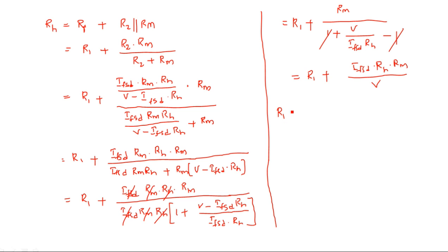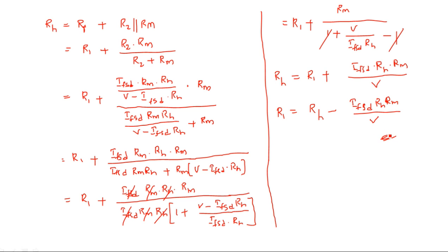But what we need? We need R1. R1 is equal to — this entire thing is equal to RH. Now we can write: R1 equals RH minus IFSD times RH times RM divided by V. This is the R1 value. So in this way we calculate R1 and R2 values for the series type ohmmeter.